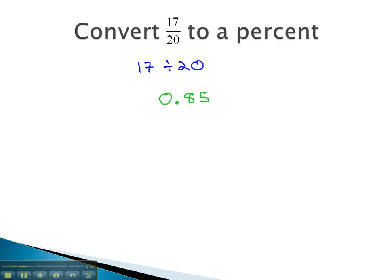Now we just have to change this decimal into a percent, which is quickly done by grabbing that decimal point and moving it twice to the right, and we get 85 percent. And we've converted 17 twentieths to its equivalent percent, 85 percent.